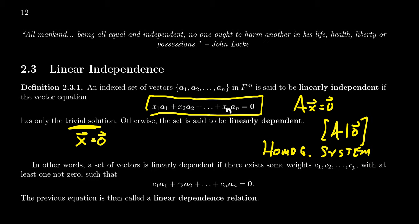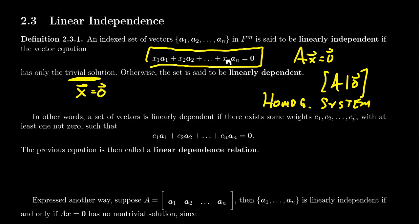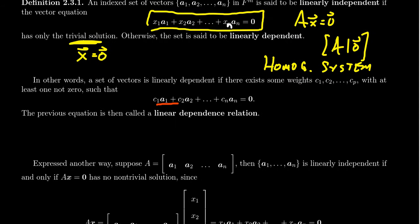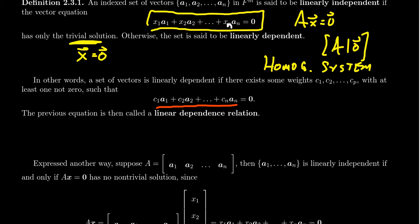So imagine if the homogeneous system does have a non-trivial solution. In that situation, those vectors would be linearly dependent. We have some specific coefficients c₁, c₂, up to cₙ, specific numbers which when combined together give us zero, but not all of the coefficients are zero. At least one of them is not zero. This is an example of a linear dependence relationship, or dependence relationship for short. There's some way of combining the vectors together in a non-trivial way to give you zero.